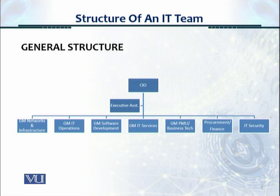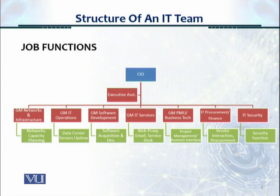There's a GM for IT operations, who looks after all the servers in the data center and making sure they're running properly. There's a GM for software development, who ensures that all software development, acquisition, and maintenance is taking place properly. There's a GM IT services looking after services such as email, web, and the help desk. The fifth resource is the GM for the PMU or project management unit and for business technology, interfacing with business departments. There's also a resource looking after procurement and finance of IT, and finally, a head of IT security.